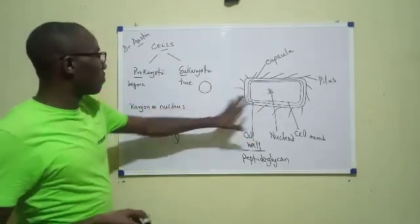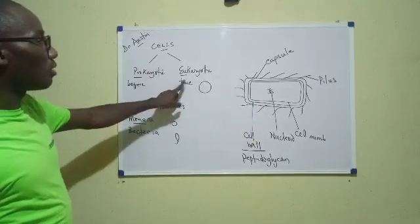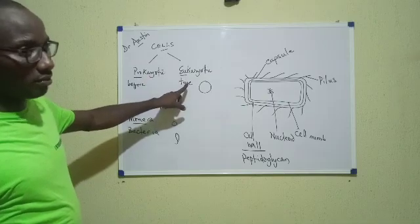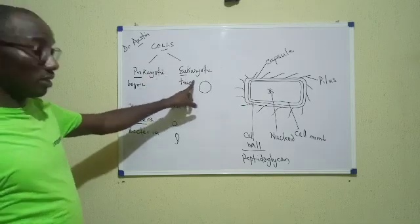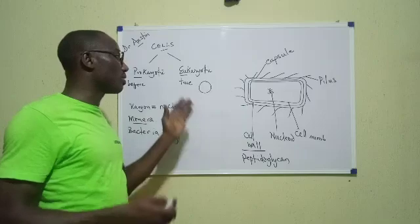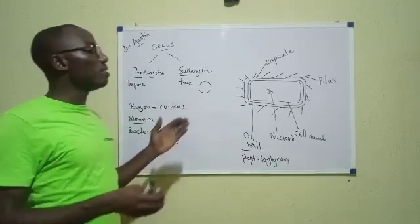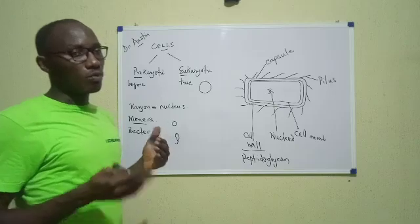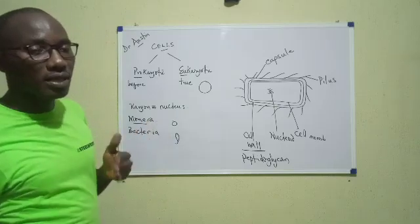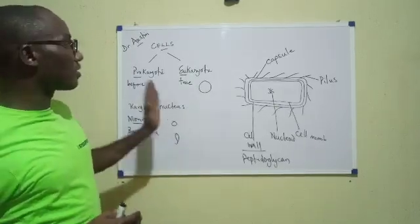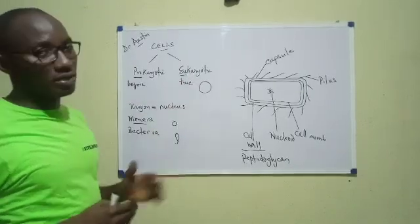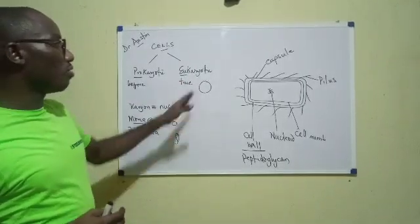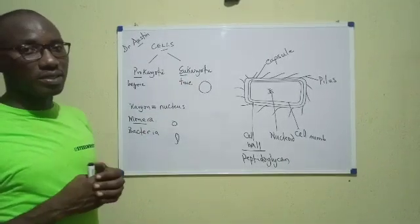Now, having seen that representation of a prokaryotic cell, what about the eukaryotic cell? Now for the eukaryotic cells, because all other organisms are eukaryotes, it means that there will be much to talk about. But for relevance sake, we usually will talk about plant cells and animal cells as the two types of eukaryotic cells. So I will tell you about eukaryotic cells in a moment.